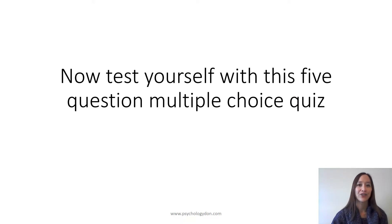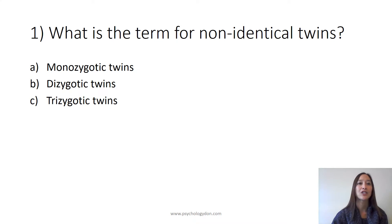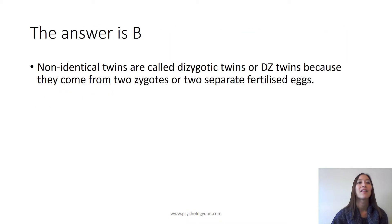Now test yourself with this five-question multiple choice quiz. Question 1: What is the term for non-identical twins? Is it A, monozygotic twins; B, dizygotic twins; or C, trizygotic twins? The answer is B. Non-identical twins are called dizygotic twins or DZ twins because they come from two zygotes or two separate fertilised eggs.